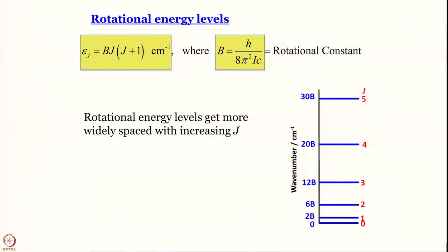Looking at ε_J = B·J(J+1): the minimum value of J is 0, so the minimum energy is 0. Compare this to the quantum harmonic oscillator, where energy can never be 0 because if the oscillator is at rest, position is 0 ± 0 and momentum is 0 ± 0, so Δx and Δp_x are both zero — which violates the uncertainty principle.